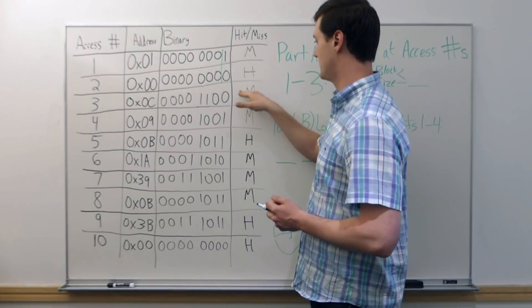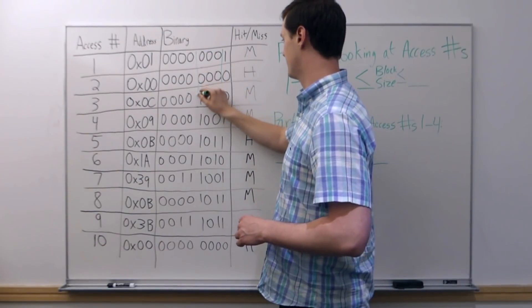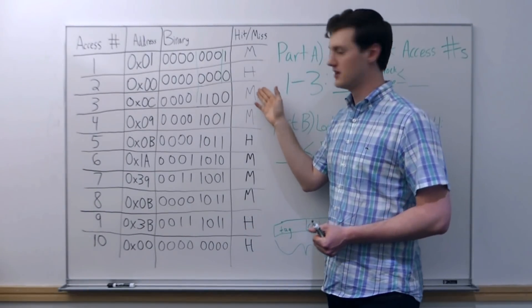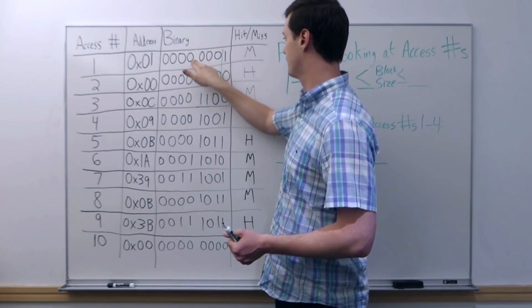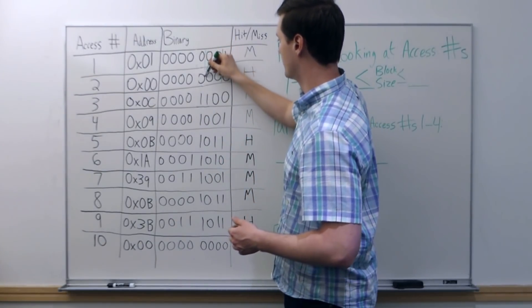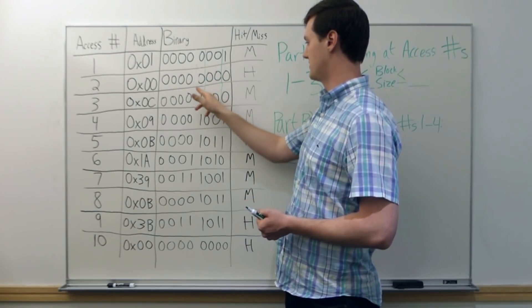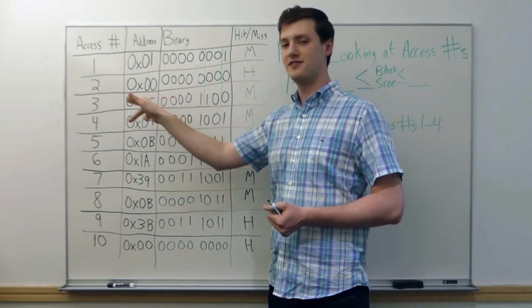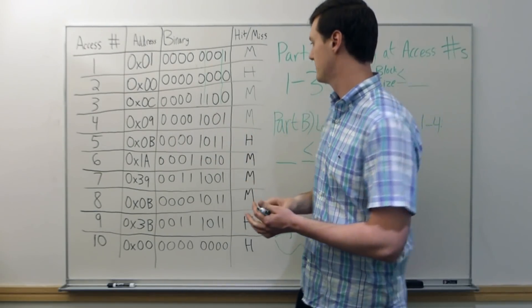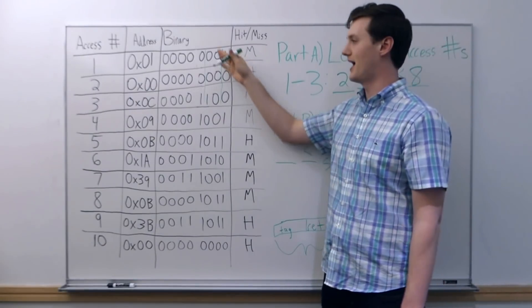For the third access we have a miss, so we work in the opposite direction. If we reserved all four least significant bits for the block offset, everything would match and this would have been a hit — so the block size can't be that large. Going one bit in to three bits for the block offset, we see a one appears, so everything left of the block offset doesn't match our previous hit. That means at a minimum the block size is two, and at a maximum the block size is eight — that's from accesses one through three.